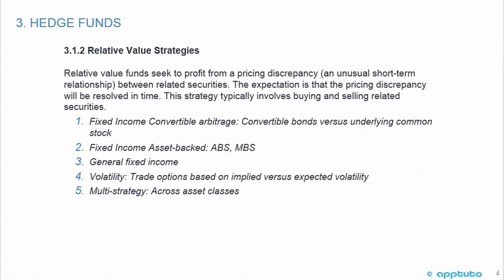The next hedge fund strategy is relative value strategies. Relative value funds seek to profit from a pricing discrepancy — an unusual short-term relationship between related securities — with the expectation that the discrepancy will be resolved in time. This strategy typically involves buying and selling related securities. There are five relative value strategies: fixed income convertible arbitrage, comparing convertible bonds versus underlying common stock; fixed income asset-backed, covering asset-backed and mortgage-backed securities; general fixed income; volatility, trading options based on implied versus expected volatility; and multi-strategy, which operates across asset classes.